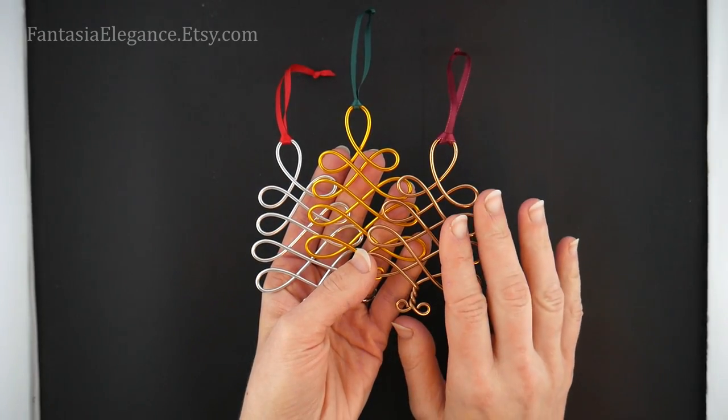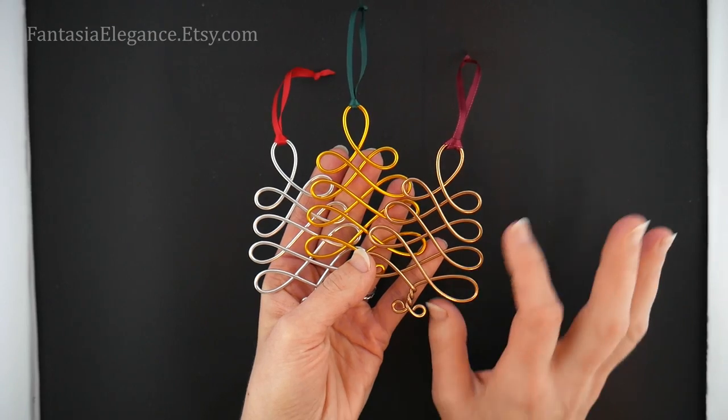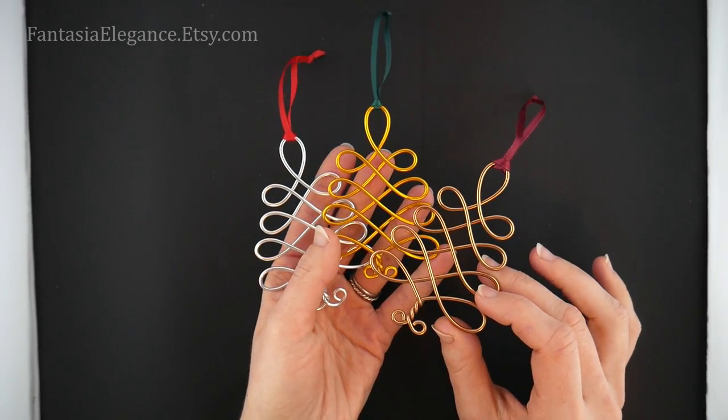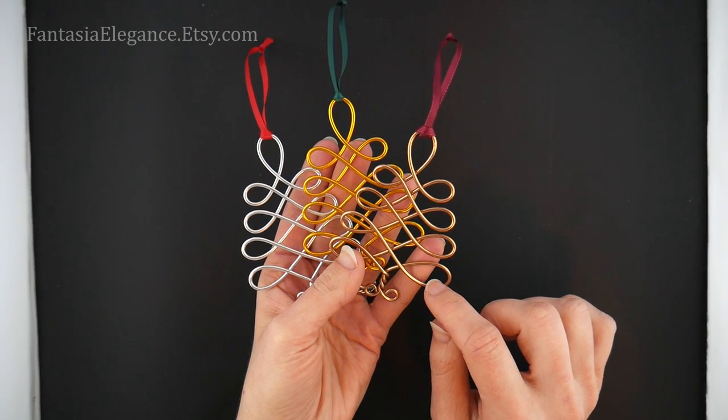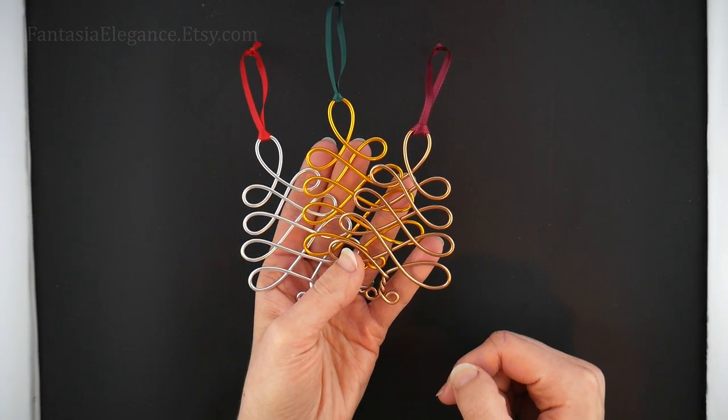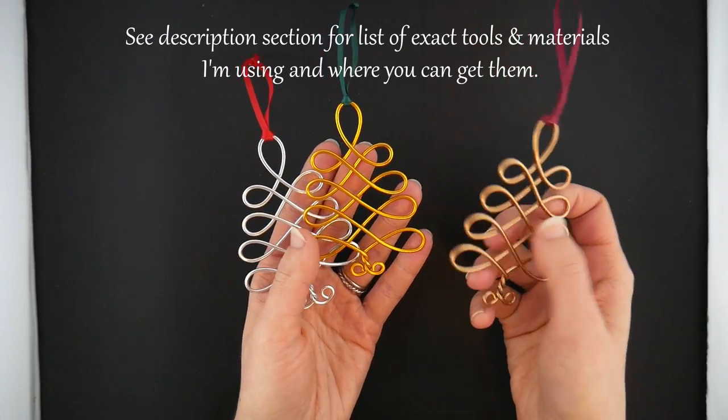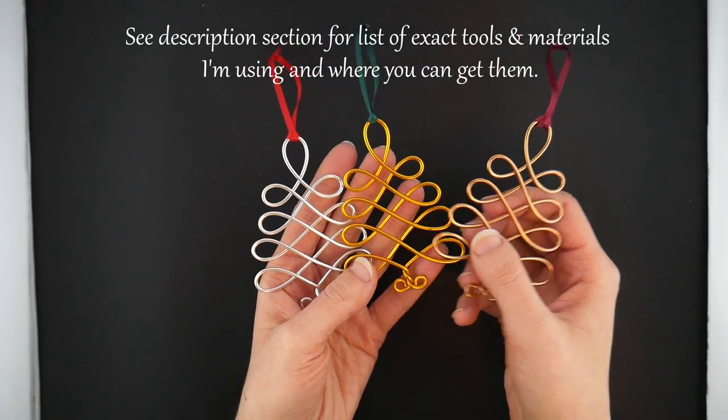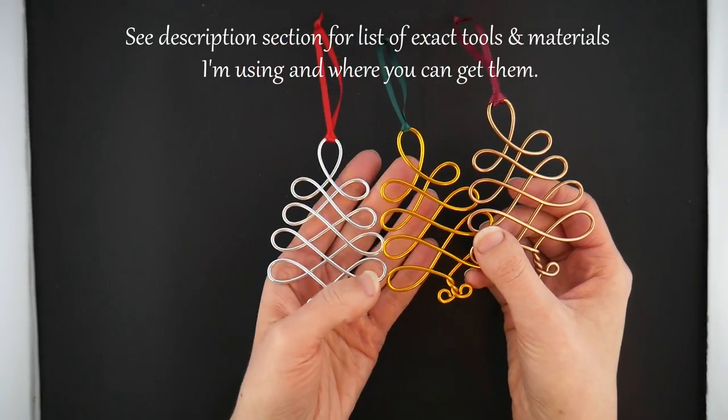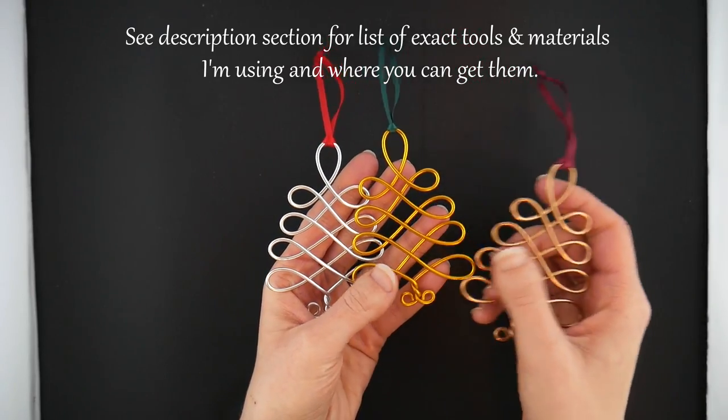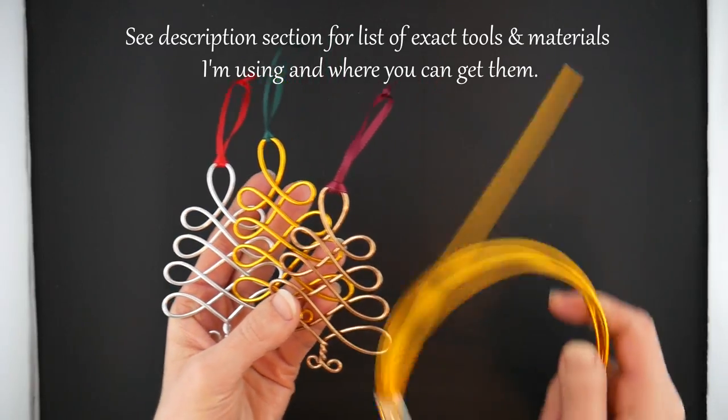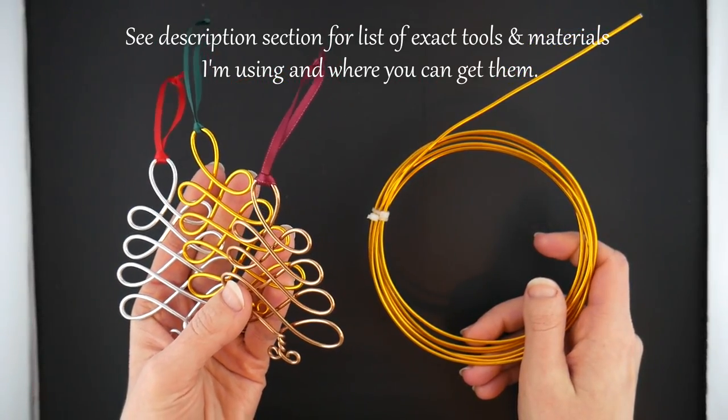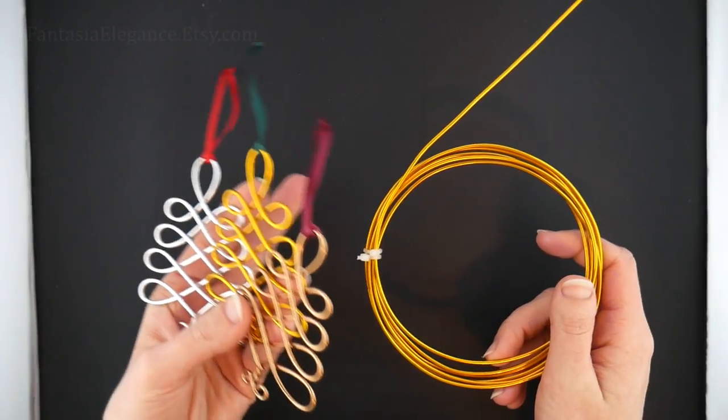I like to use aluminum wire for these. It's very nice and lightweight and doesn't tarnish, both of which are great for Christmas tree ornaments. I'm using 12 gauge aluminum wire here and I'll leave a link in the description for where I buy mine on Amazon. You can do any color you like. It comes in lots of different options. I've done it in silver, gold, and bronze. Today I'll be working with gold 12 gauge aluminum wire.